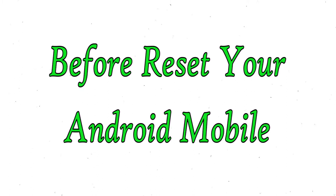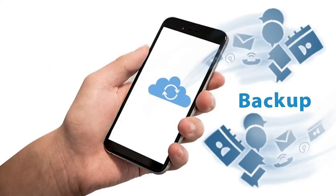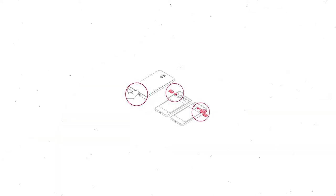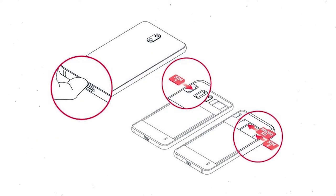Before resetting your mobile, make sure the battery is properly charged. If less than 50%, charge your mobile. You need to make sure that the data on your device is backed up so you do not lose valuable photos or documents. Reset deletes all your mobile data, so you should back up all important data and remove SIMs and SD card.